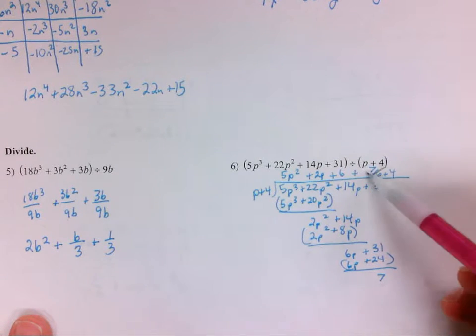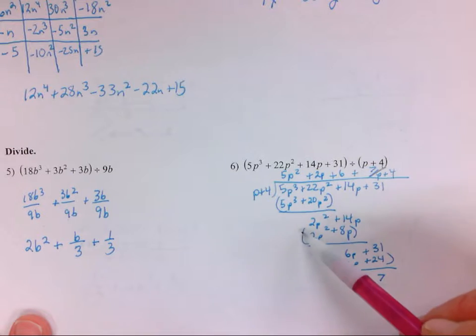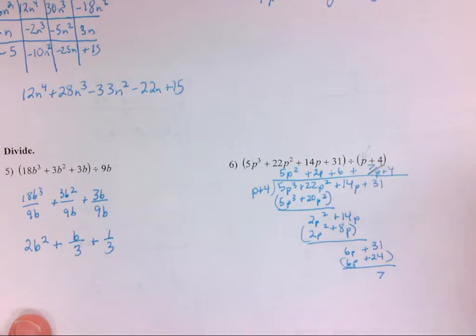P plus four. If we were doing this as a synthetic division, we could. That would be a negative four for your outside there.